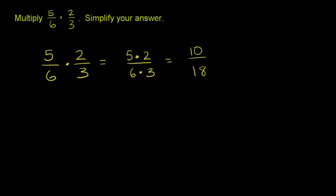So if we want it in lowest terms, we want to divide them both by 2. So divide 10 by 2, divide 18 by 2. And you get 10 divided by 2 is 5, 18 divided by 2 is 9.